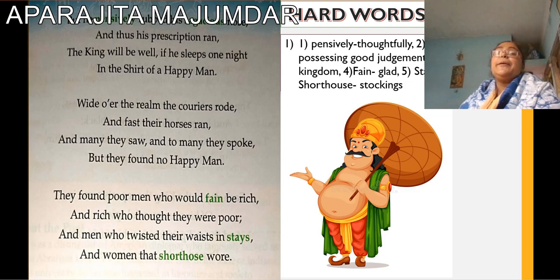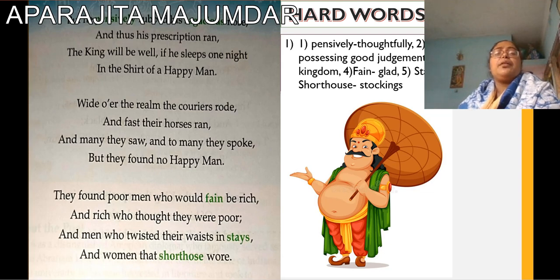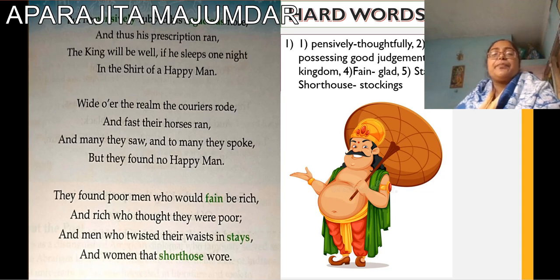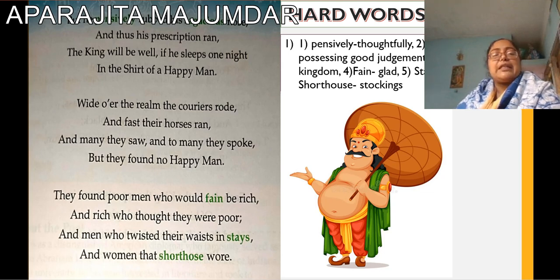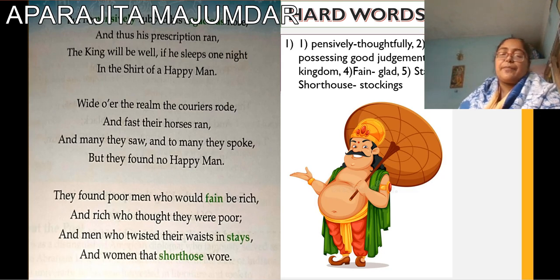What are the hard words here? Pensively means thoughtful. Sagacious means wise and possessing good judgment power. Realm means a kingdom. Fain means glad. Stays means a support, a corset. And short hose means stockings — I need to correct the spelling and send it to you all once more.